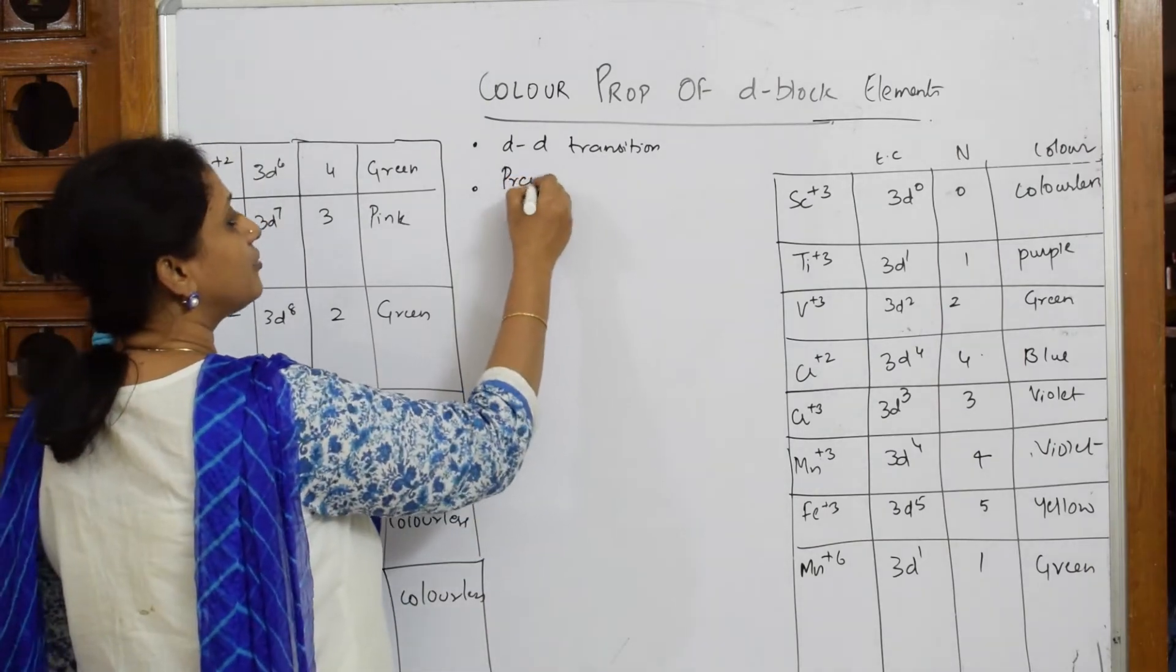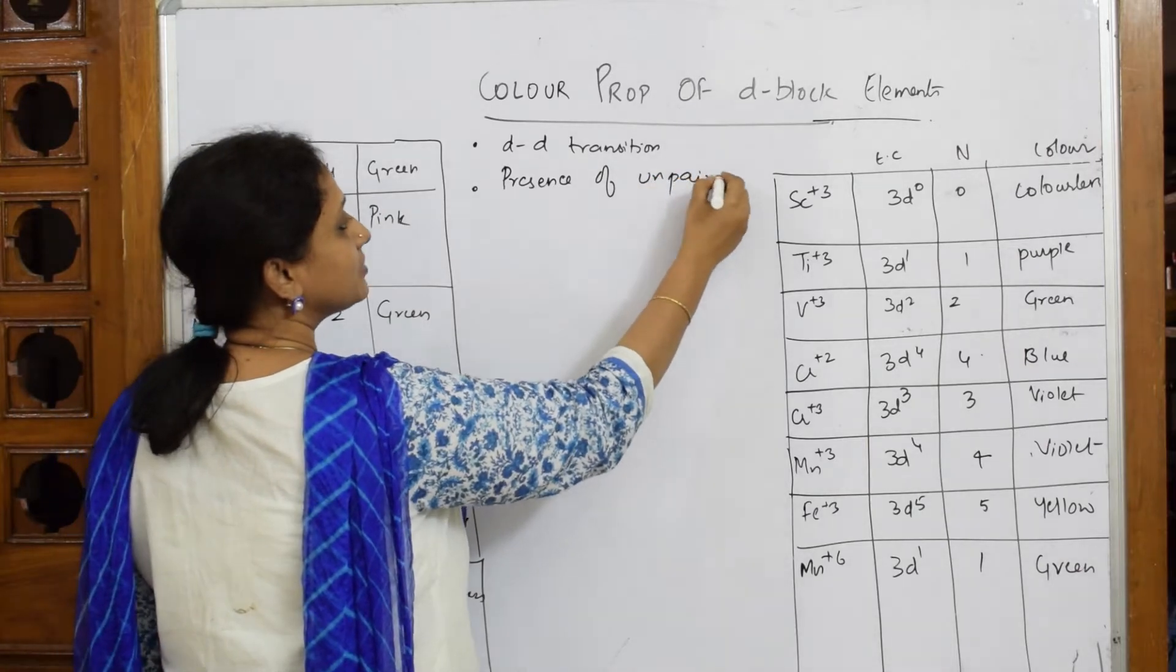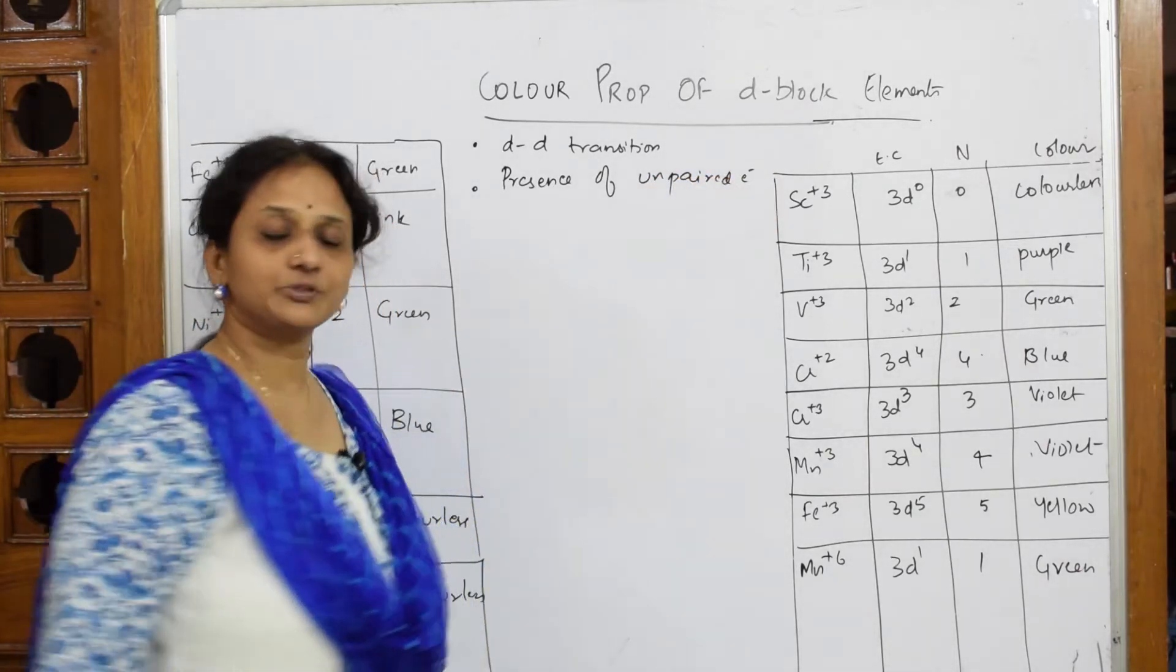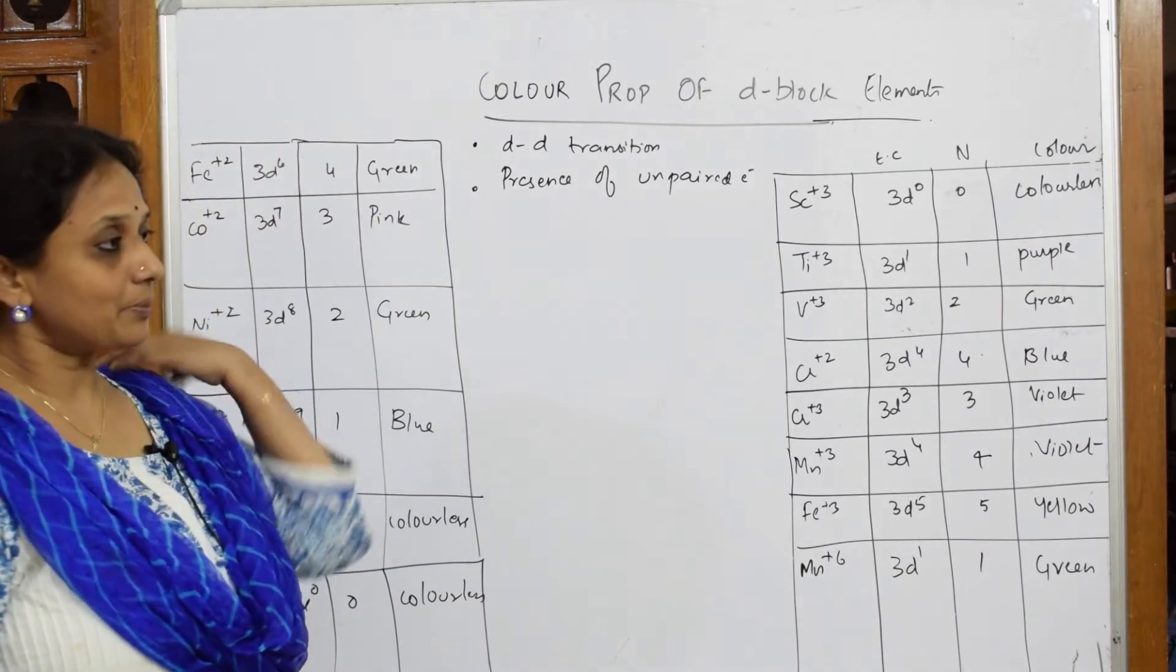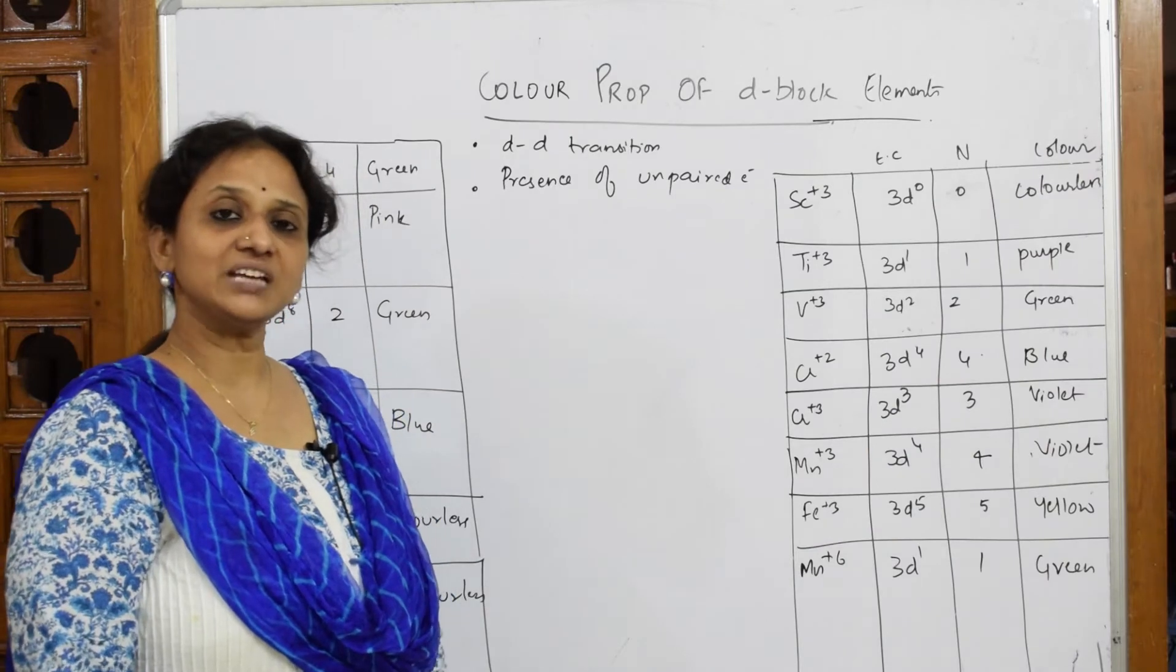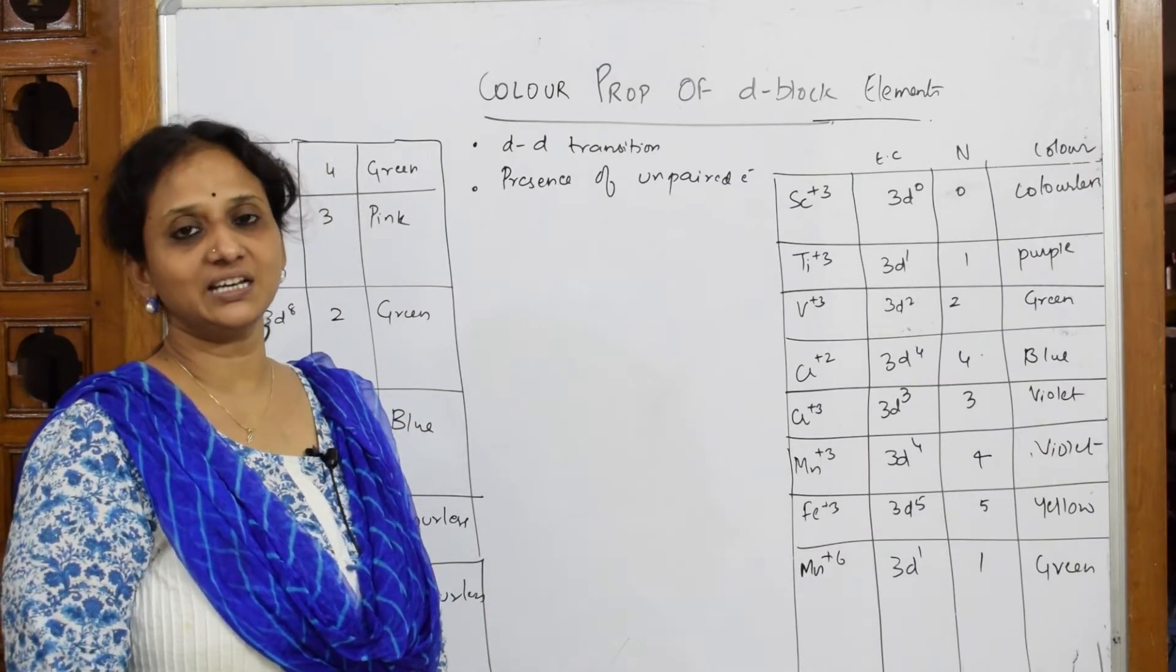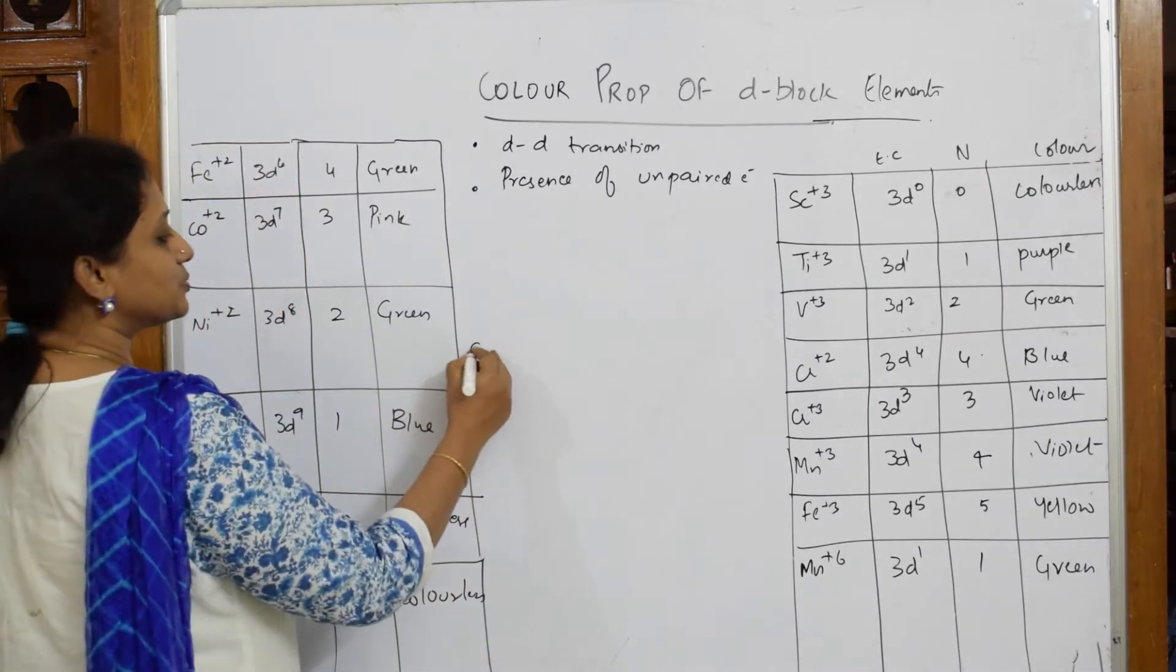Why is it showing d-d transition? Because of the presence of unpaired electrons. This is important - if they're paired, the concept of color would not exist. Color property in d-block elements: the electron enters into the n-1 d sub shell.